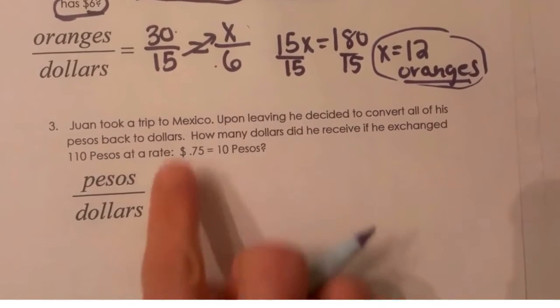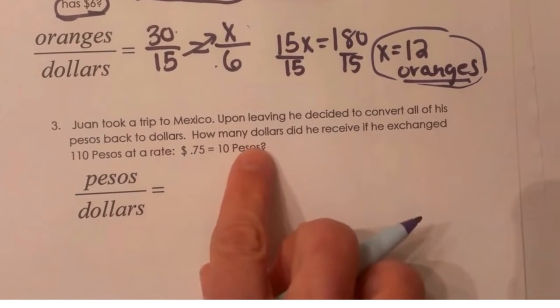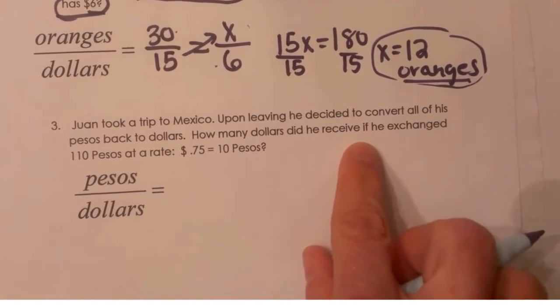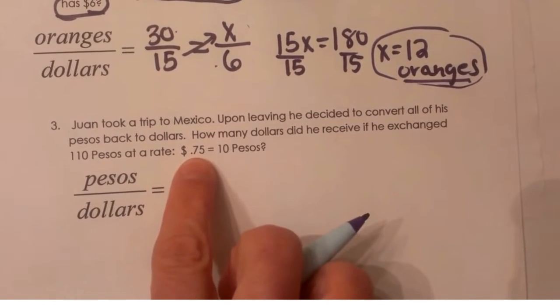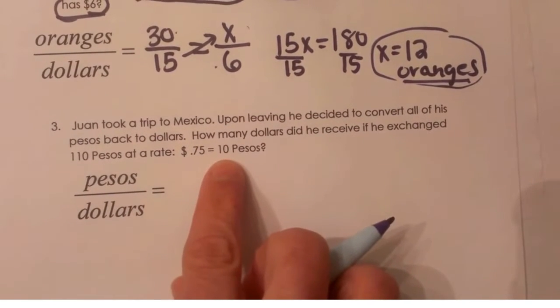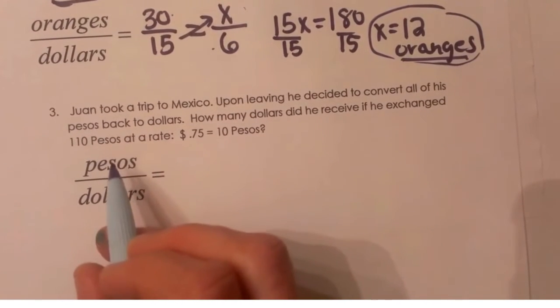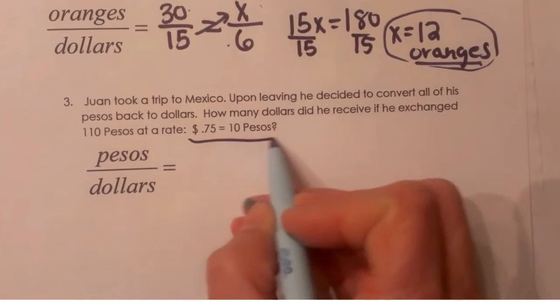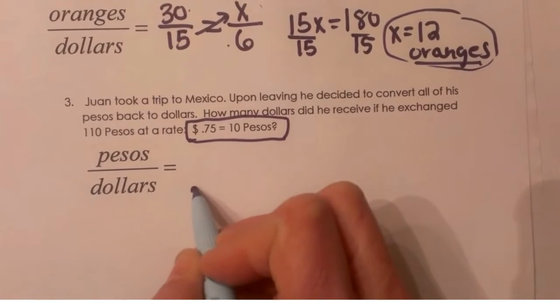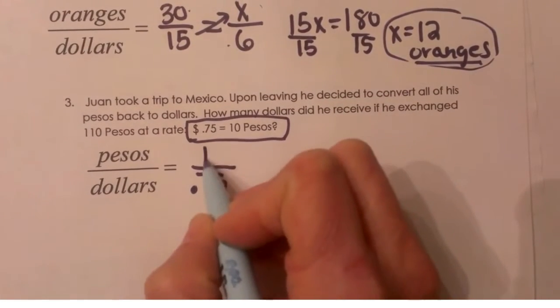Here's one more. Juan took a trip to Mexico. Upon leaving he decided to convert all his pesos back to dollars. How many dollars did he receive if he exchanged 110 pesos at a rate of 75 cents per 10 pesos? So let's try to set this up. We're going to put pesos on top and dollars on the bottom. Well what do we know? We know this proportion is true.